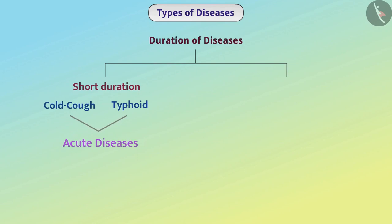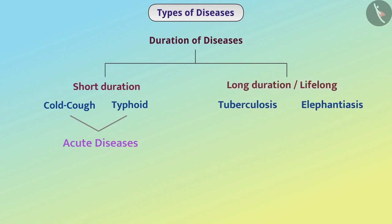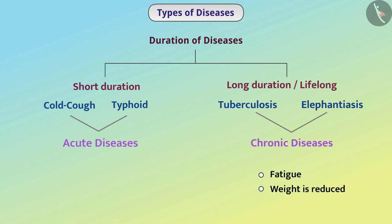Acute diseases do not harm our health much. Some diseases like tuberculosis and elephantiasis develop after a long time and are of long duration or lifelong. Such diseases are called chronic diseases. Since the disease lasts for a long time, they cause specific harm to our health. Therefore, the patient feels fatigue and their weight is reduced.